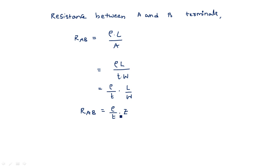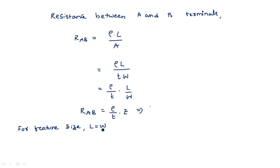The term ρ/T can be written separately. For the feature size condition, where L = W (the smallest possible dimension), Z = L/W = 1, so R_AB = ρ/T. We define this as sheet resistance RS. Therefore, in general, R_AB = RS × Z, where RS = ρ/T.